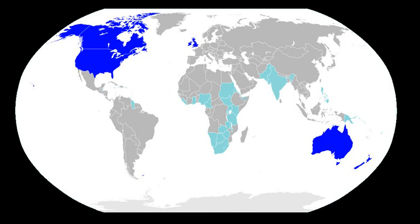However, English is rarely spoken as a first language in India, numbering only around a couple hundred thousand people, and less than five percent of the population speak fluent English. Modern English, sometimes described as the first global lingua franca, is also regarded as the first world language. English is the world's most widely used language in newspaper publishing, book publishing, international telecommunications, scientific publishing, international trade, mass entertainment, and diplomacy. By international treaty, English is the basis for the required controlled natural languages Seaspeak and Airspeak, used as international languages of seafaring and aviation.